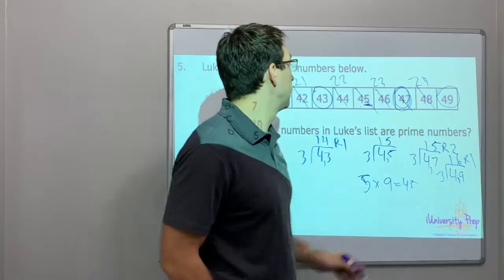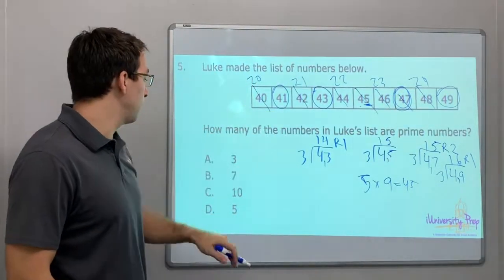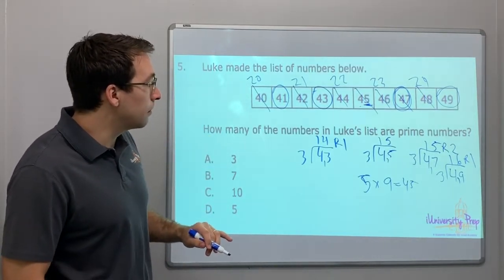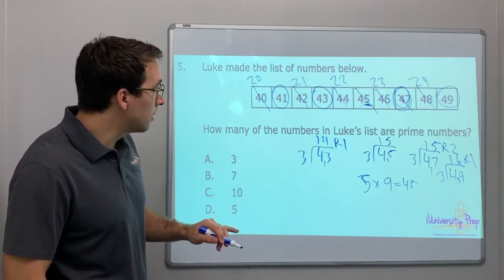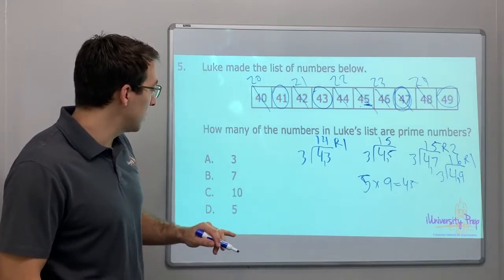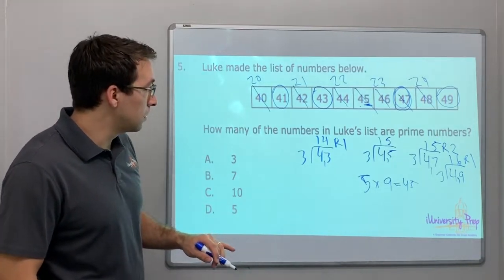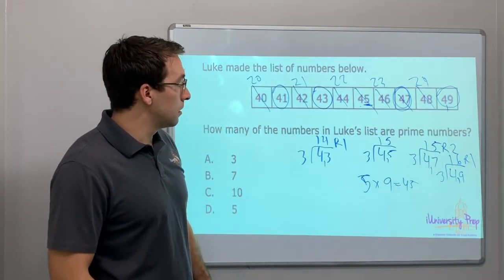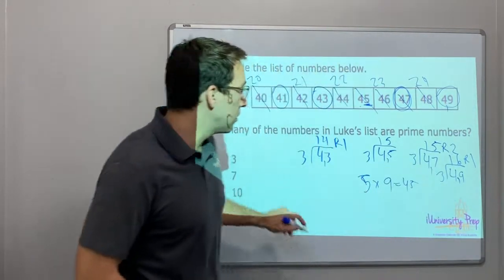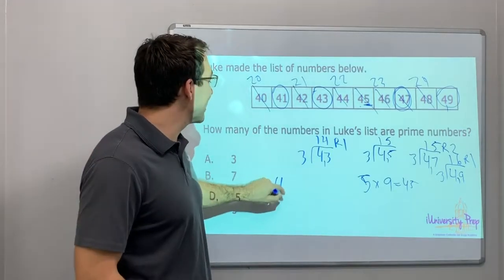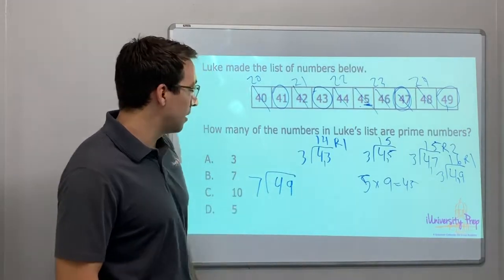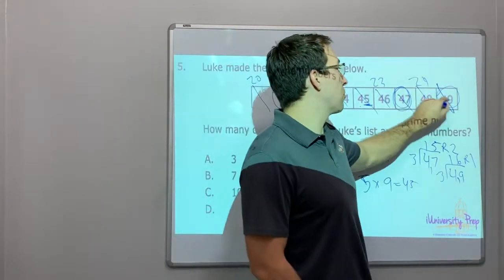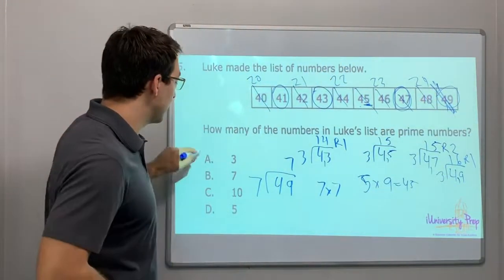Wait — I marked 47 as prime. Let me recount. Actually, I got 49 wrong. Check this out: 49 is divisible by 7 — 7 times 7 is 49 — so 49 is NOT a prime number. The answer is 3 prime numbers in Luke's list.